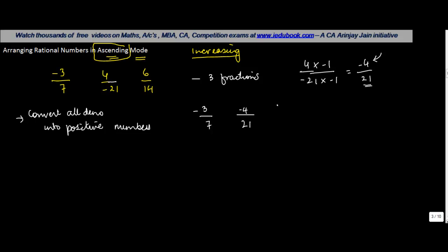Then we convert each of these fractions into equivalent fractions with a common denominator. To do that, we take the LCM of all denominators: 7, 21, and 14. We divide by 7 to get 1 and 2, by 3 to get 1, 1, 2, and by 2 to get 1. So the LCM will be 7 into 3 into 2, which equals 42.